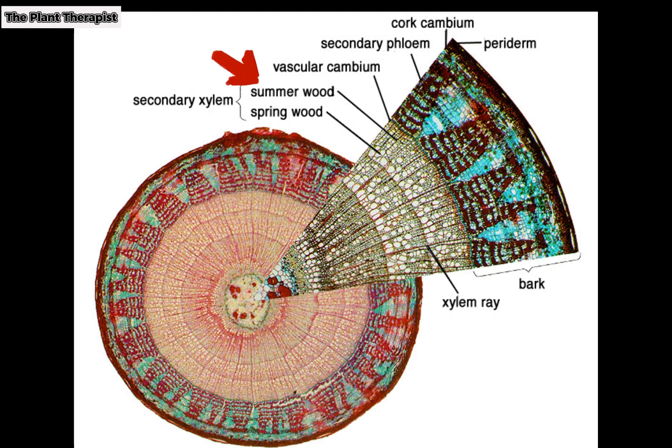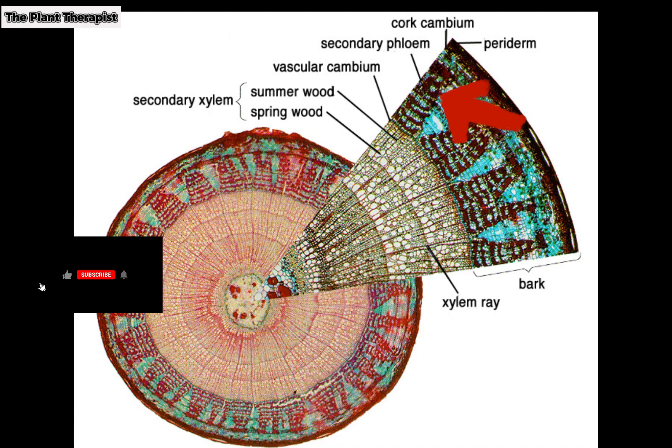The xylem that is produced after the spring wood, which has smaller or fewer vessel elements and larger numbers of tracheids, is referred to as summer wood. In conifers, the wood consists mostly of tracheids, with vessels and fibers being absent. The vascular cambium produces more secondary xylem than it does phloem; xylem cells also have stronger, more rigid walls than those of phloem cells and are less likely to collapse under tension.